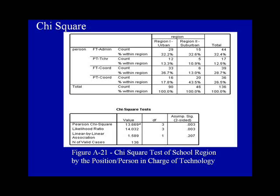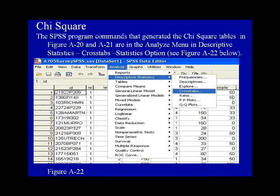The SPSS program commands that generated the Chi-square tables in Figure 8.20 and 8.21 are in the Analyze menu under Descriptive Statistics, using the Crosstabs option, and then using the Statistics option. See Figure 8.22.